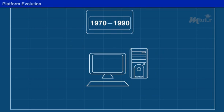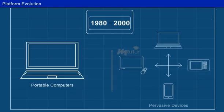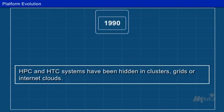From 1970 to 1990, personal computers were built with VLSI, that is, very large-scale integration microprocessors. From 1980 to 2000, portable computers and pervasive devices appeared in both wired and wireless applications. Since 1990, the use of HPC, that is, high-performance computing, and HTC, that is, high-throughput computing systems, have been embedded in clusters, grids or Internet clouds.